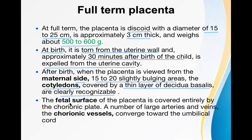The fetal surface of the placenta is covered entirely by the chorionic plate, which has membranes called chorion and amnion. A number of large arteries and veins known as chorionic blood vessels converge towards the umbilical cord, forming the umbilical vein, and travel into the umbilical cord. These are the important structural details of the placenta at the time of delivery.